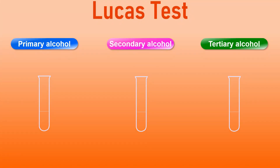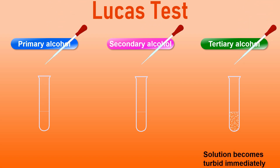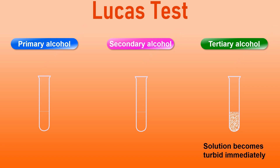Here is how you perform the test. Place primary, secondary and tertiary alcohols in separate test tubes. Now add LUCAS reagent to each test tube. In the case of tertiary alcohols, the solution becomes turbid or cloudy immediately, as shown on the screen. Keep in mind that since the alkyl chlorides are immiscible liquids with alcohols, we observe this turbidity or cloudiness.